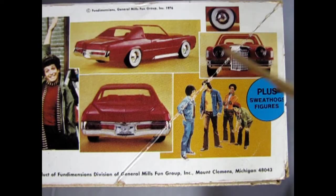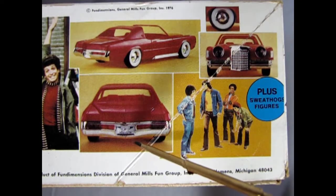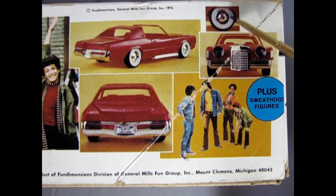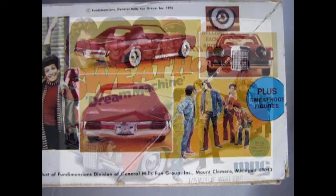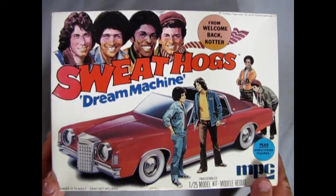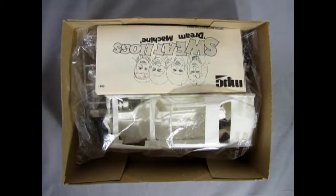And here we have the three-quarter rear shot of the car as well as the back end, front end, your white wall tires, and the four Sweathogs. And now let's take the lid off this box and check out the Sweathogs Dream Machine.